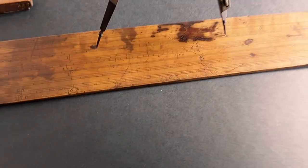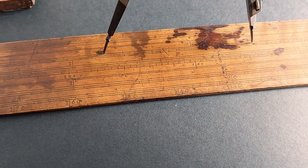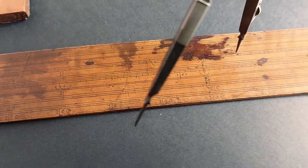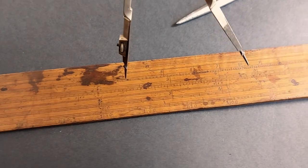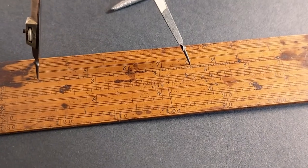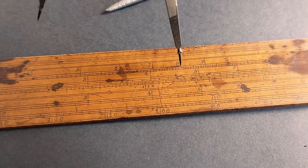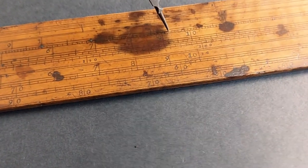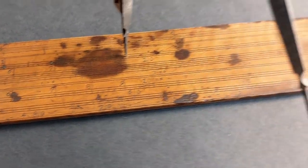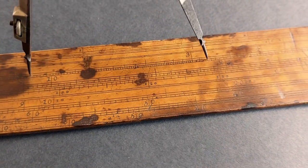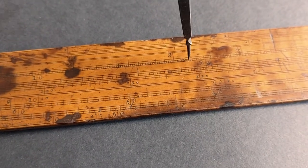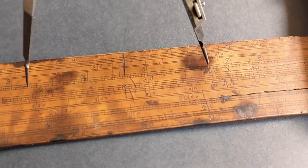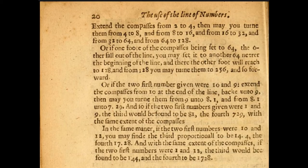8 times 2 is 16. And now here we are doing it on the actual rule in real time: measuring 2 to 4, then turning the compasses as instructed — it takes us to 8, then into the second decade of the scale to 16, 32, and 64, which takes us to the end of the rule.